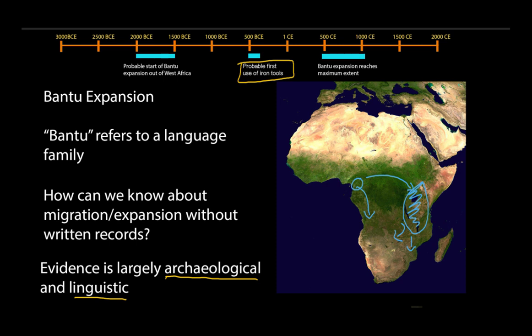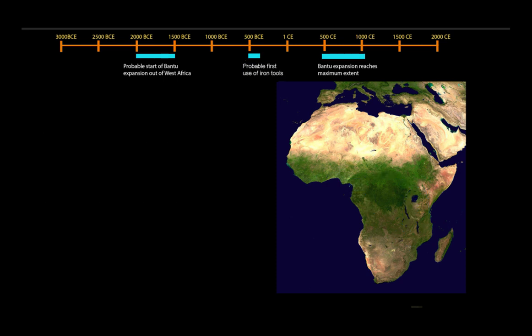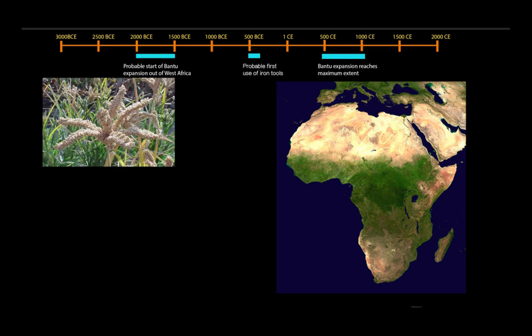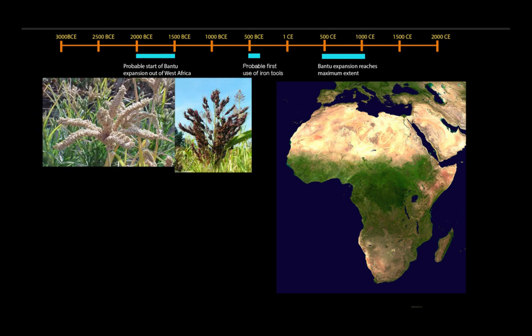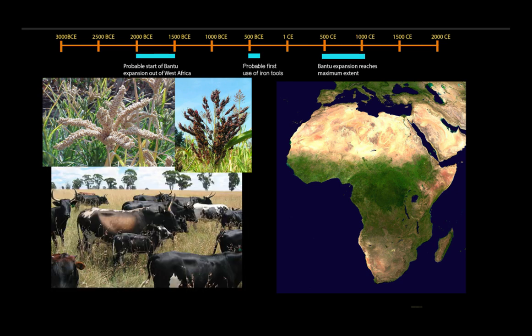The next question is: why did they migrate to the places that they did? One thing we know about Bantu-speaking peoples is that they tended to have fairly consistent agricultural practices. Among the crops they were growing were millet and sorghum. Once they reached the Great Lakes region and started moving south, you also see them adopting cattle herding. These crops and cattle all tend to thrive in what's known as a tropical or semi-tropical savanna climate.